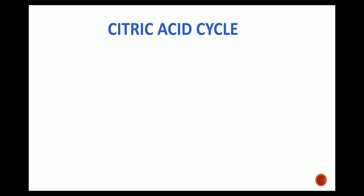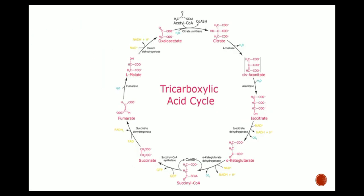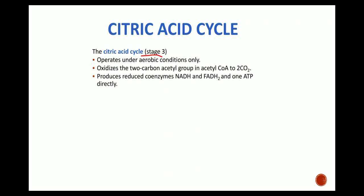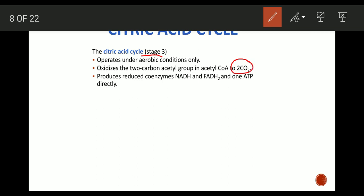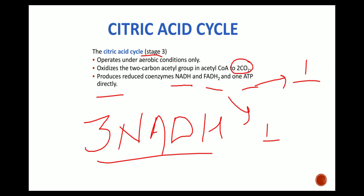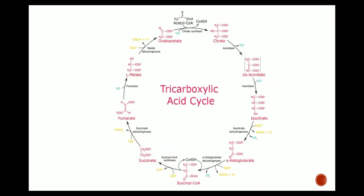The citric acid cycle is the third stage of cellular respiration — first is glycolysis, second is oxidative decarboxylation. It operates under aerobic conditions only and oxidizes the two-carbon acetyl group in acetyl coenzyme A to CO2. It produces reduced coenzymes: three NADH, one FADH2, and one ATP per turn of the cycle.